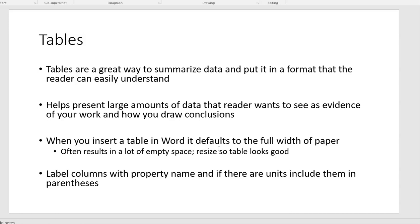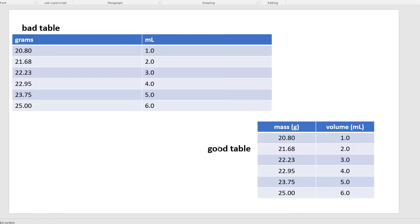Here I was just showing you a bad table and a good table. Bad table, it's too big. I don't use properties. I use units to label the columns. I've decided for some weird reason to left justify all the information, which leaves all this empty white space. I like the table in the lower right a lot better.